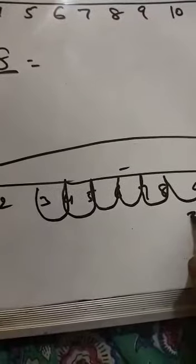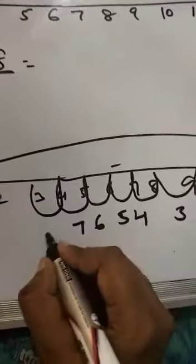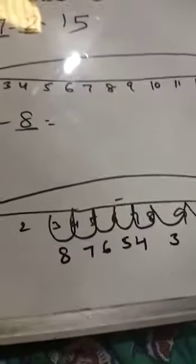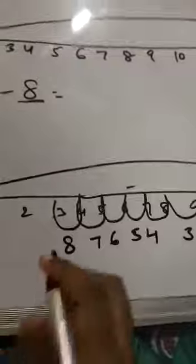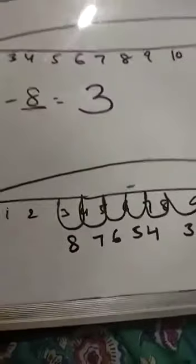1, 2, 3, 4, 5, 6, 7, 8. 8 steps hamne backward liye. Hamne pichhe ki taraf 8 steps liye. To ham kaunse number per aaye? We are on number 3. Then answer will be 3. Answer will be 3.